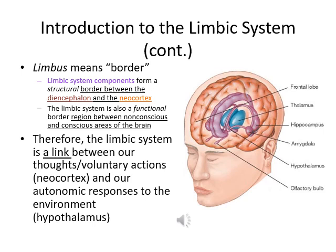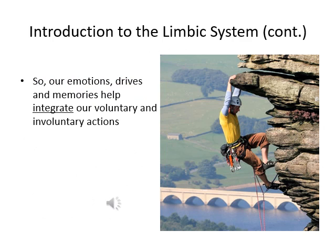The limbic system also acts as a functional border, located between the non-conscious and the conscious areas of the brain. It is a link between the more rational neocortex and our very basic autonomic responses to the environment. Our limbic system combines emotion, drive, and memories, and sends them to our neocortex, which integrates them into voluntary and involuntary actions.